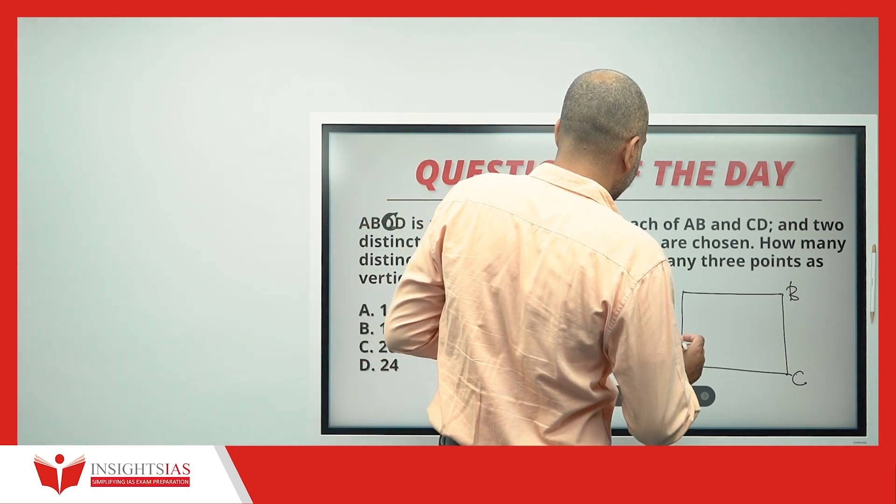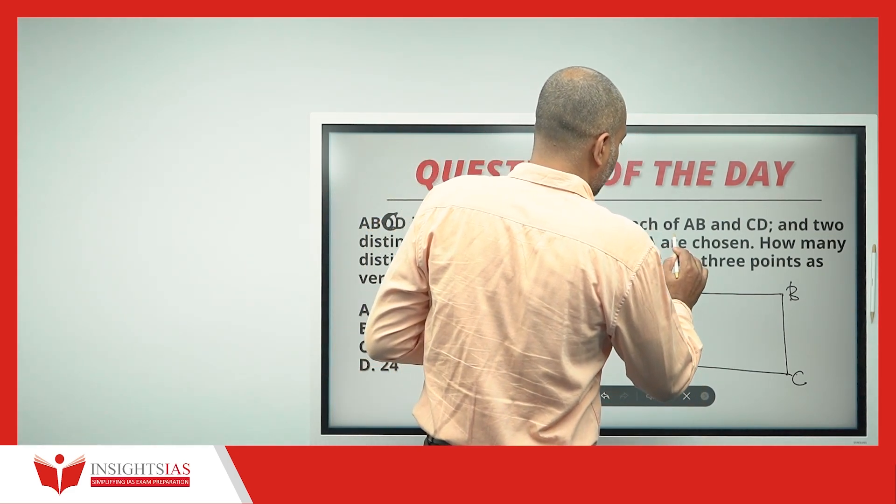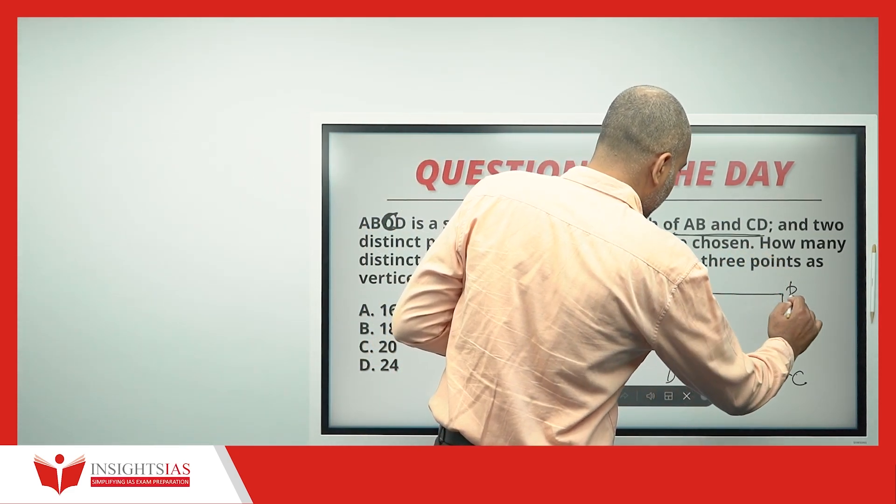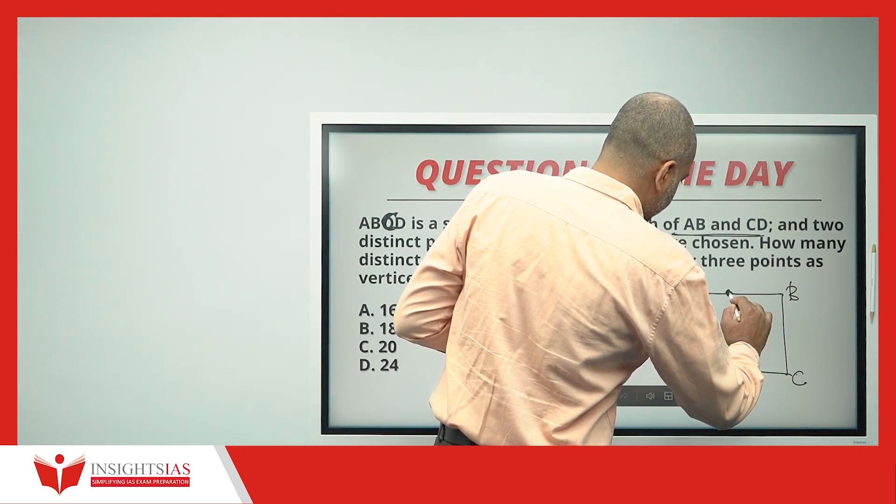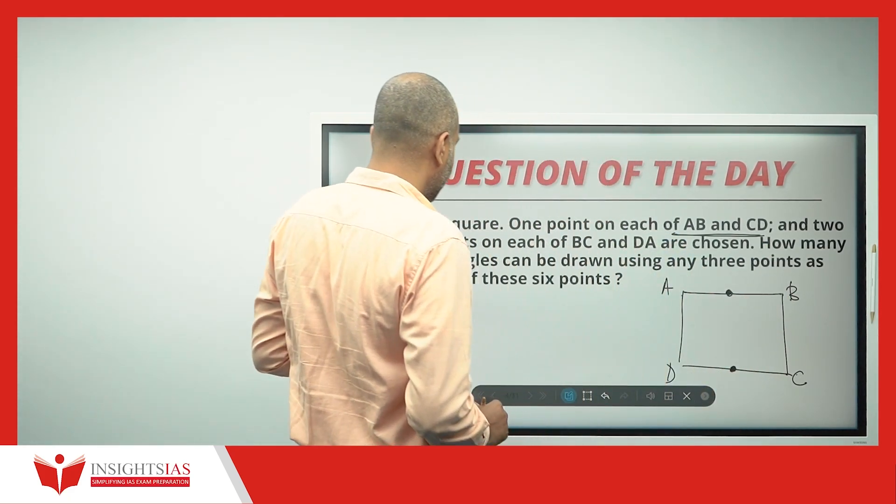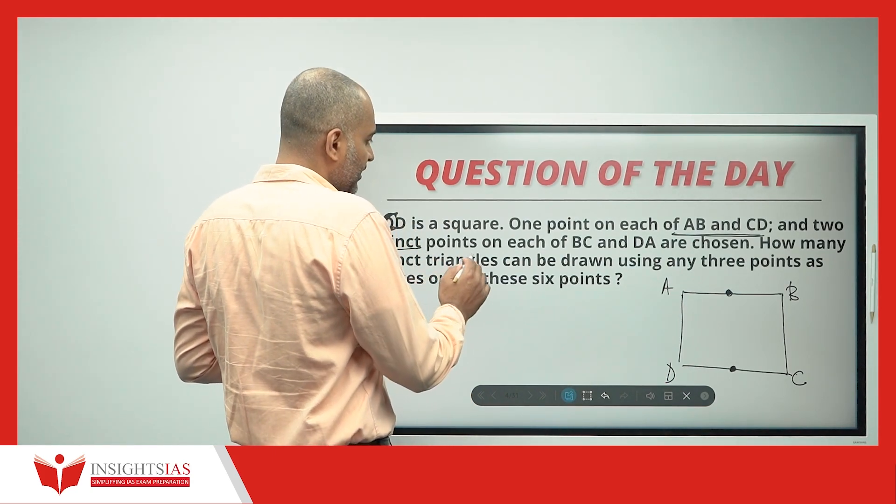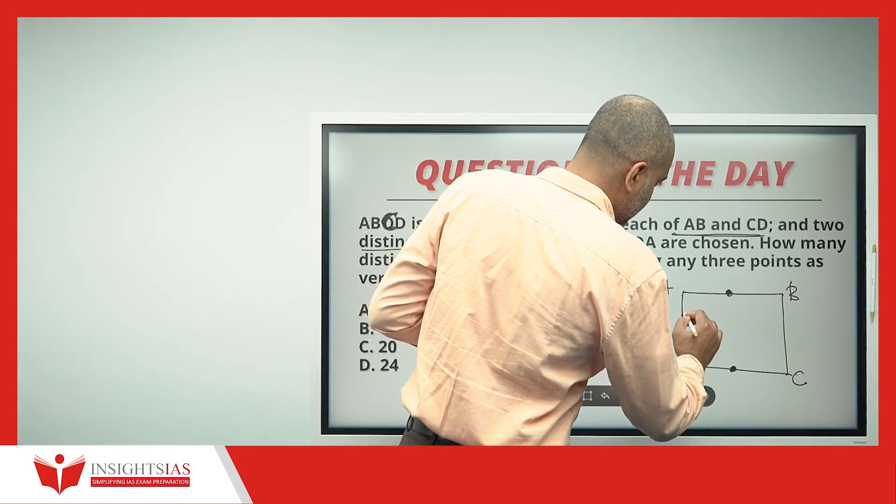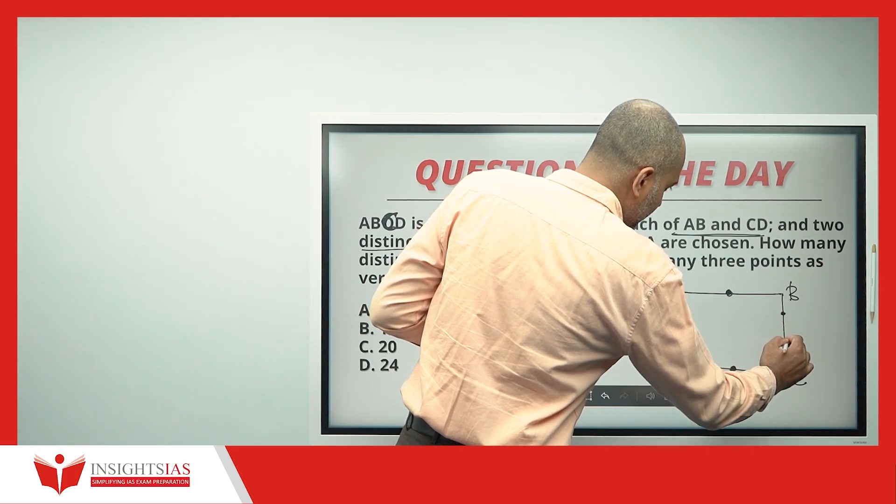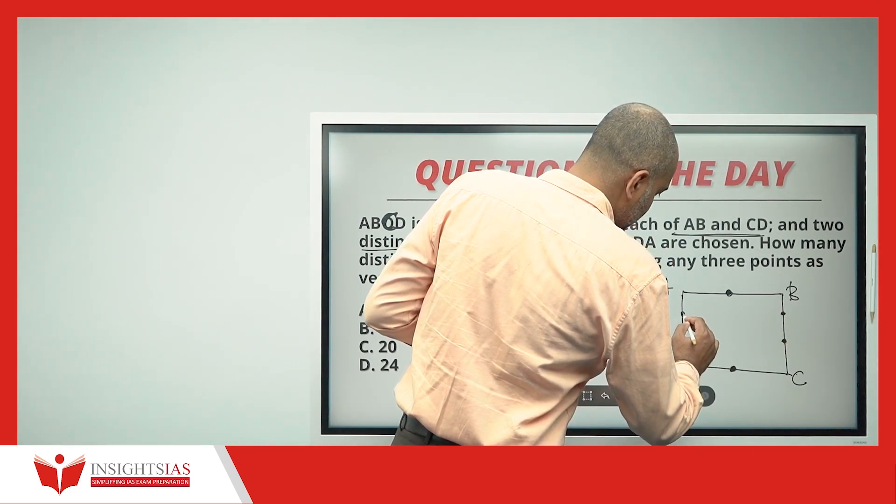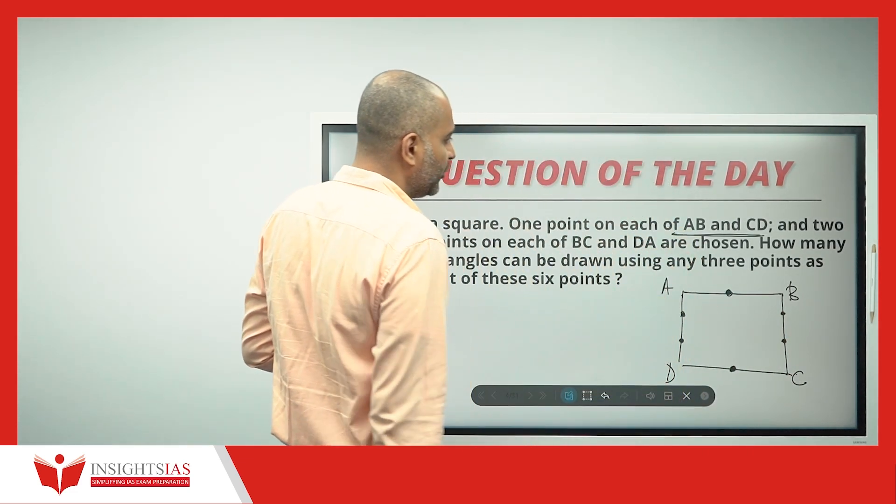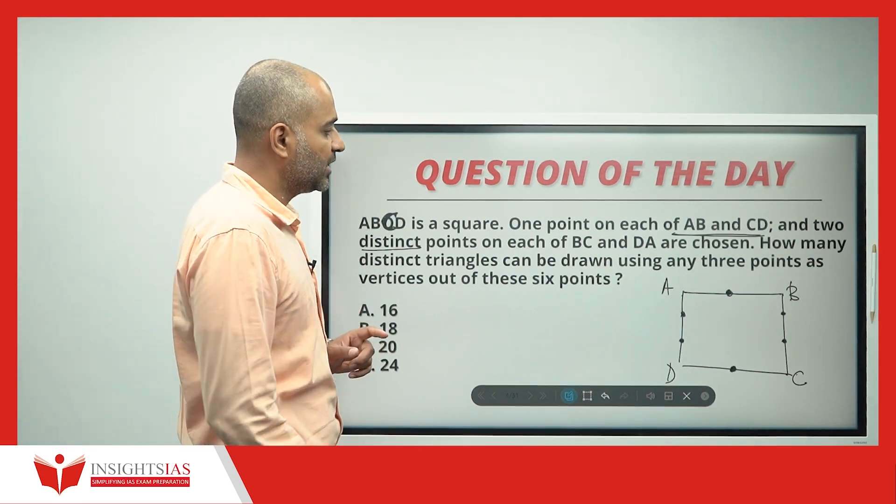And two distinct points on each of BC and DA. One point on each of AB and CD. See, AB, one point is there. And CD, one point is there. And two distinct, different points on each of BC and DA. See, BC, two points. DA, two points. This is how the points are there.